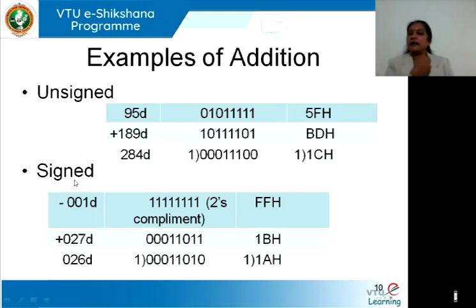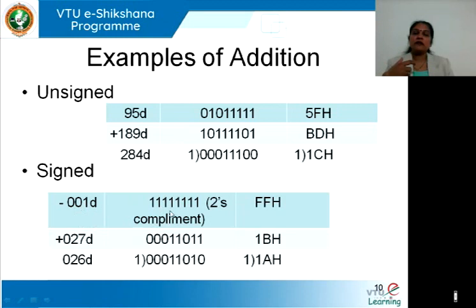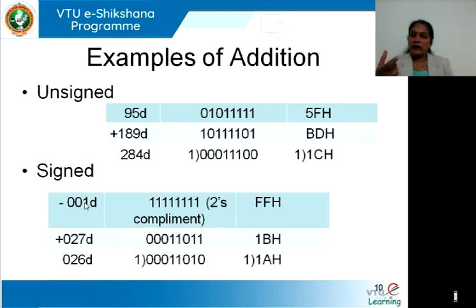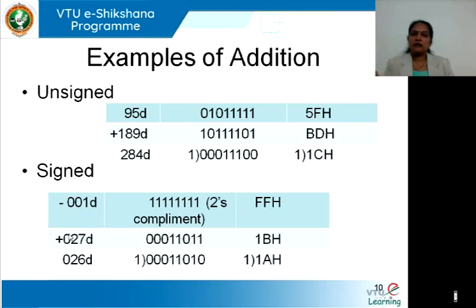Now let us look at an example with signed numbers. Adding minus 1 plus 27 gives 26 decimal. Minus 1 is represented in 2's complement as all 1s, and 27 in binary is added to it. On addition, a carry is generated but is discarded. Both the input and the output are valid signed numbers, so the carry flag is not set and there is no overflow. This goes back to fundamentals studied in number systems, logic design, or basic electronics.